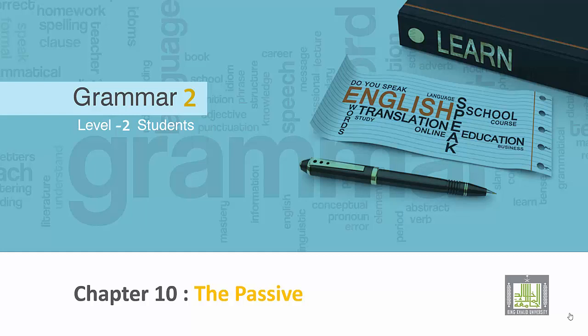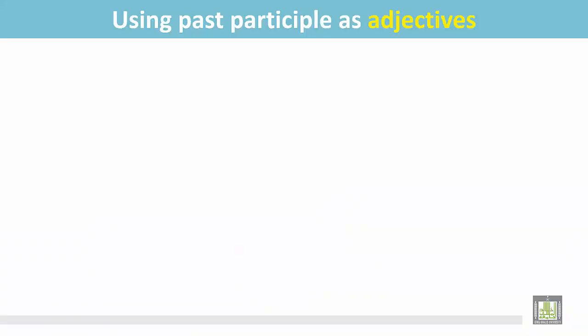Grammar 2 for level 2 students. Chapter 10: The Passive. Using past participles as adjectives.